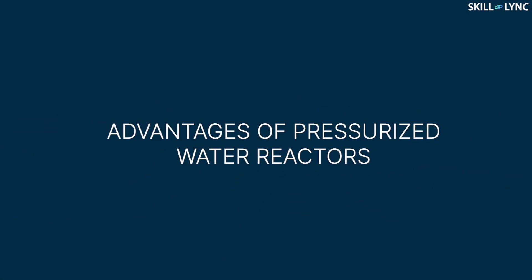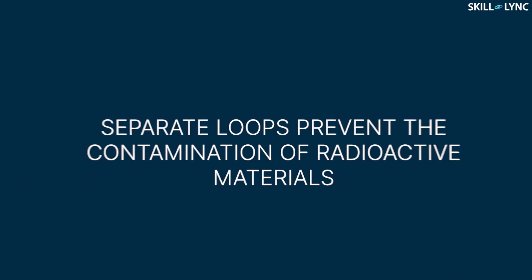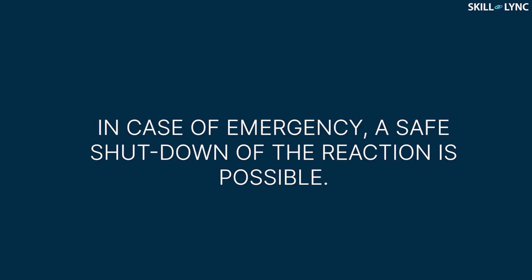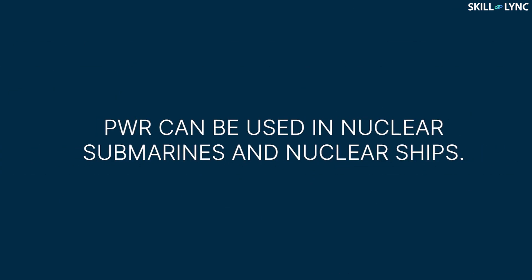Now, let's see some advantages of the most common nuclear reactor. First, pressurized water reactors are very stable due to the self-regulating process. Due to the primary and secondary loops being separate, the secondary loop does not get contaminated by radioactive materials. In case of loss of power, the control rods held by electromagnets fall into the core by gravity, which shuts down the reaction safely. Also, pressurized water reactors, due to their compactness, can be used in nuclear submarines and nuclear ships.